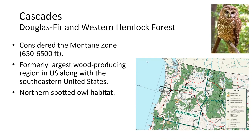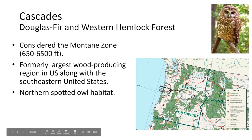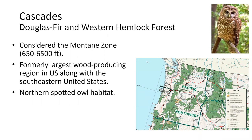The main forest type in the Cascades is Douglas fir and western hemlock, considered the montane zone. This used to be the largest wood-producing region in the United States, ahead of the southeastern US. That came to a halt in the early 1990s when the northern spotted owl was declared a federally endangered species. Once this was identified as critical habitat for the northern spotted owl, much of this forest land — under public ownership — was shut down, and the logging industry was greatly impacted in the Pacific Northwest. Our need for fiber and wood shifted the geography of the industry to the southeast.